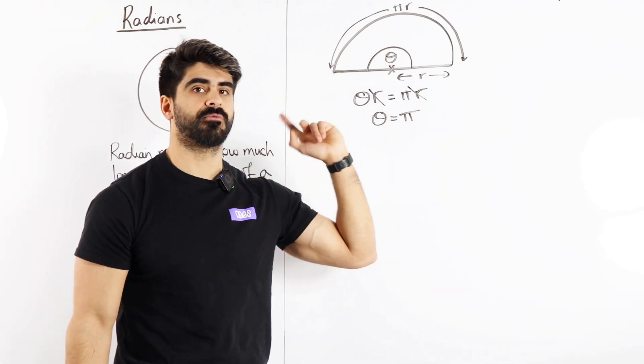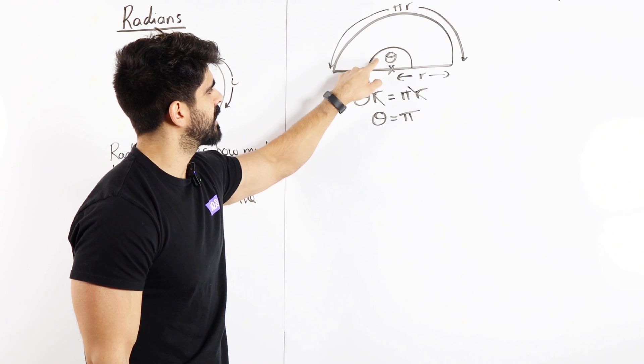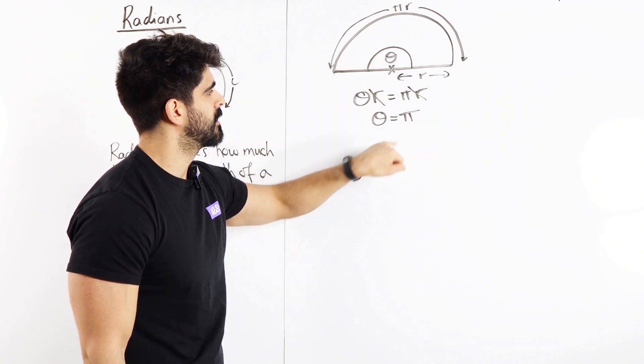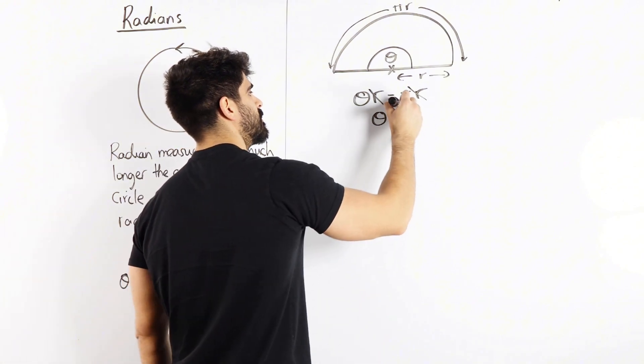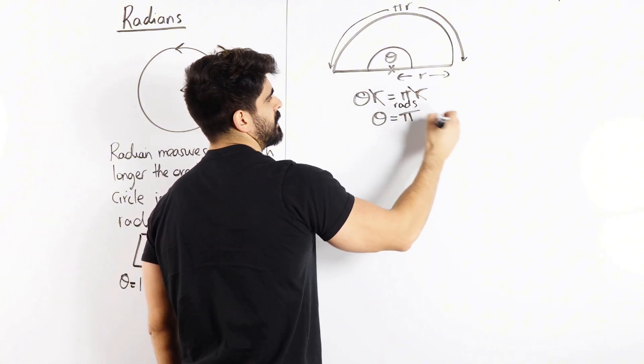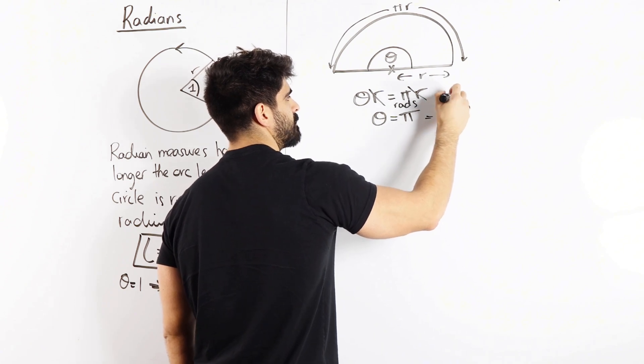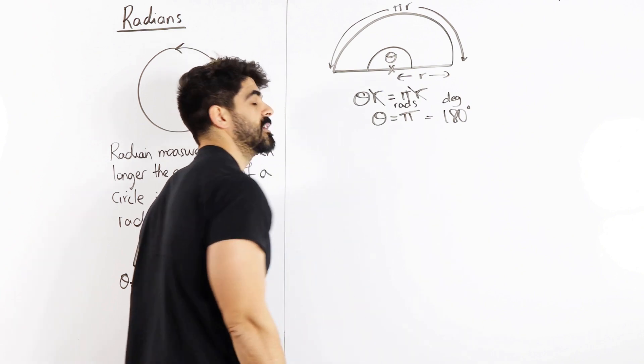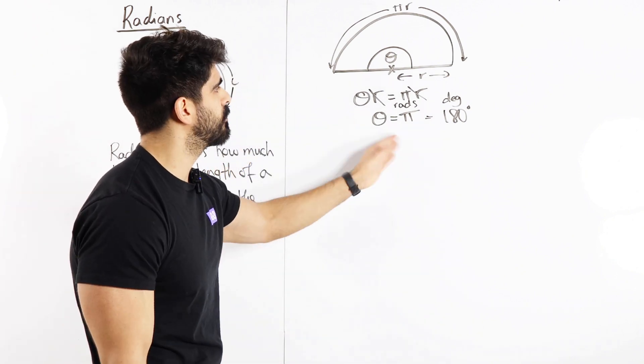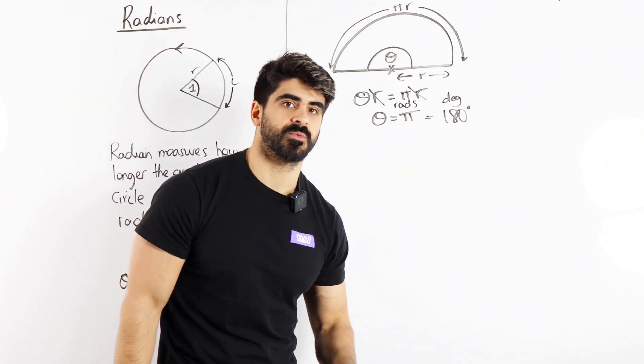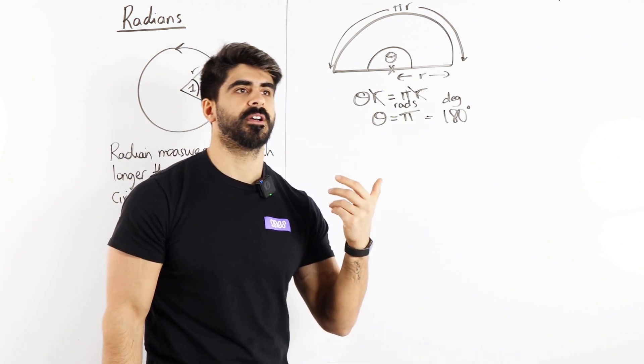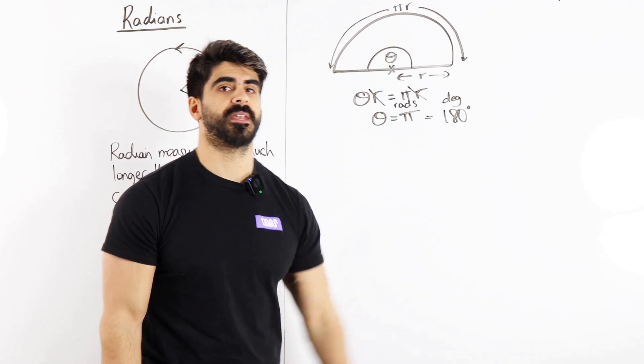So in a semicircle in radians, this angle here is pi. But we also know, so this is radians, that pi is 180 degrees. And there's our first conversion. Pi radians is 180 degrees, which allows us to work out or write down very common angles.